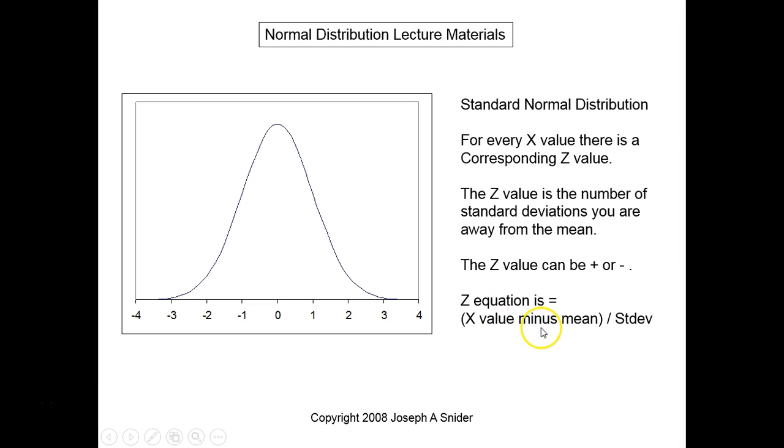Here's the formula for it: Z equals X value minus the mean divided by the standard deviation. So any X value along your X axis has a corresponding Z, and it's based upon putting it through this formula. It can be positive or negative. The English way to state what a Z score is: it's the number of standard deviations you are away from the mean.